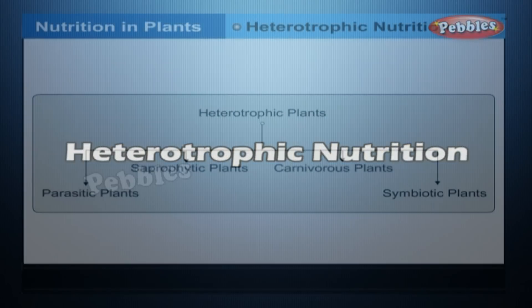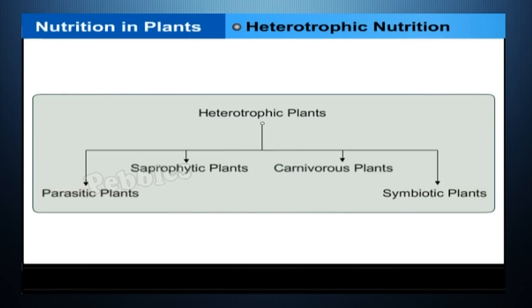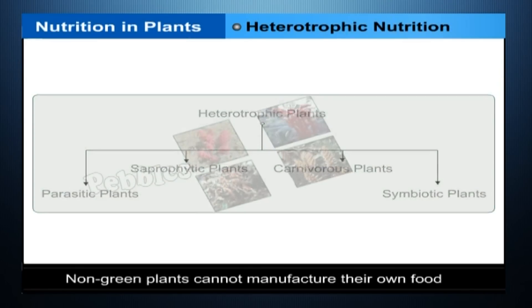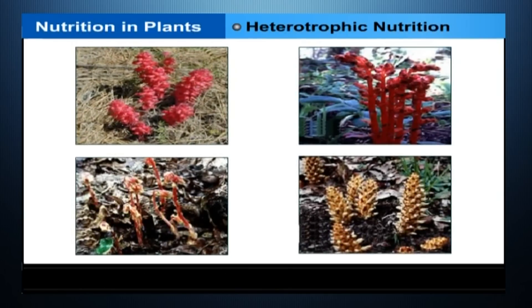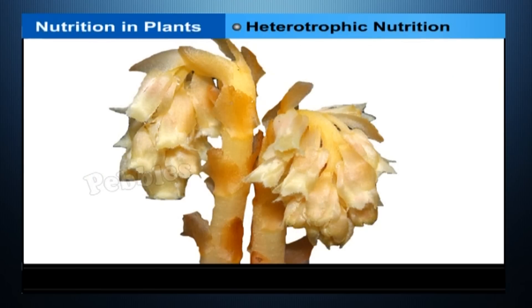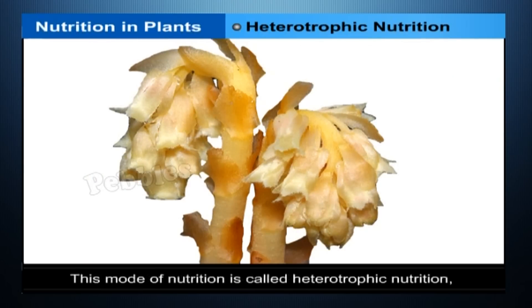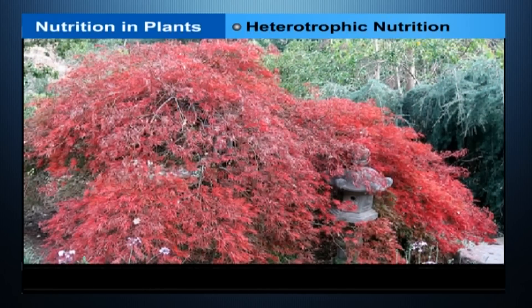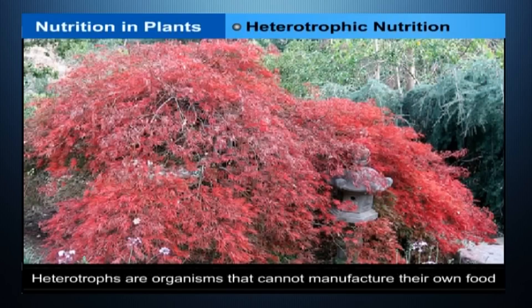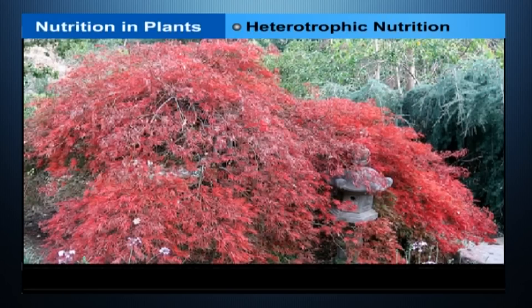Heterotrophic Nutrition. Plants called non-green plants are unable to manufacture their own food. Some plants can manufacture their own food, but the soil in which they grow does not have all the nutrients. Such plants depend on green plants or on other living bodies. This mode of nutrition is called heterotrophic nutrition and such plants are called heterotrophs — organisms that cannot manufacture their own food and depend on other plants or animals to obtain energy.